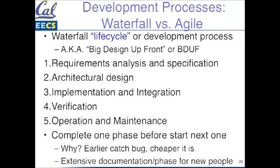Why do they do it this way? A lot of data suggests the earlier you catch the bug, the cheaper it is. If you don't catch it until the verification phase, that's a lot harder to fix. If you could just get it right in requirements, you'd save a lot of money. Another reason for the extensive documentation is these phases take a long time, people come and go, and a new person on the team gets up to speed by reading the documentation.